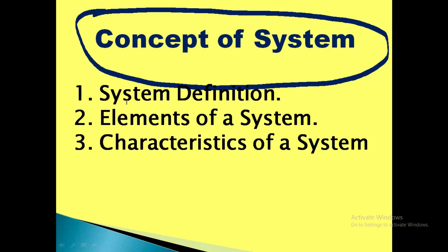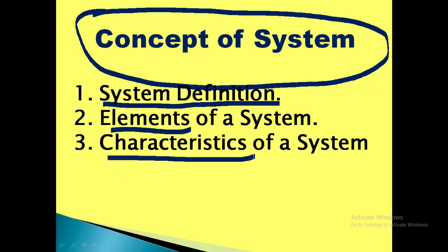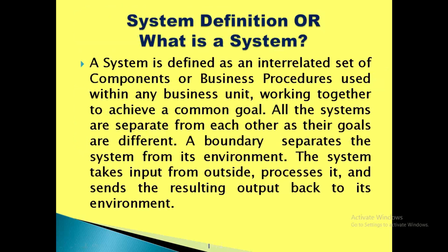In today's lecture, we will cover three things: Number 1, the definition of a system; Number 2, elements of the system; Number 3, characteristics of the system. These three questions can also come up in the examination.